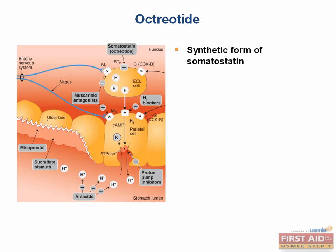The next drug we'll talk about is octreotide. Octreotide is a synthetic form of somatostatin and is a more potent inhibitor of growth hormone, glucagon, and insulin. It inhibits many hormones such as gastrin, growth hormone, CCK, glucagon, insulin, secretin, and VIP. It reduces GI motility and inhibits contraction of the gallbladder. Octreotide also reduces secretion of intestinal secretions, causes vasoconstriction of blood vessels, and reduces portal vessel pressures in bleeding varices.